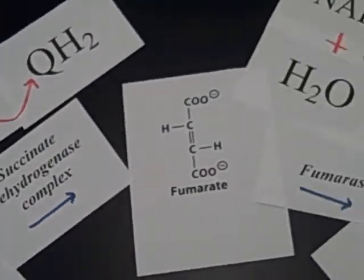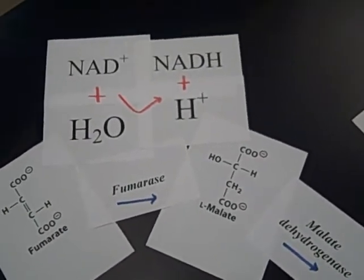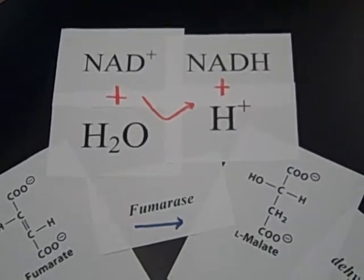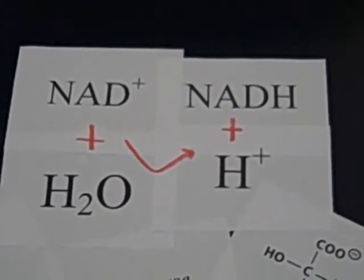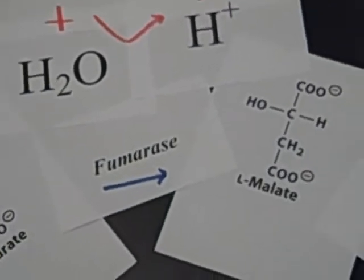Fumarase changes the fumarate into malate. This is a hydration reaction where you must put water in and it produces NADH as a byproduct.